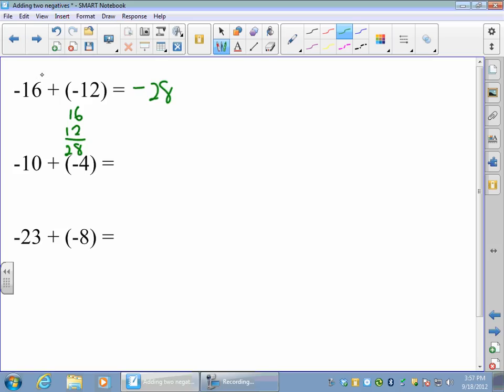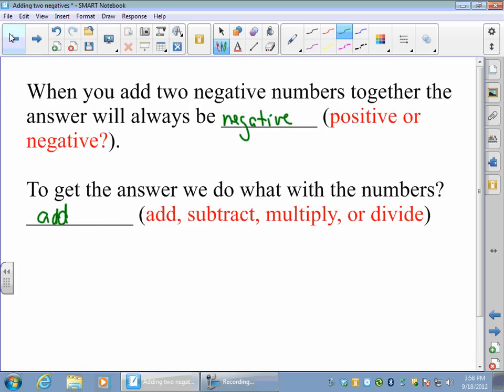Okay, so the first one, again they're both negative, so when I add them that's negative. 10 plus 4 is 14. That's it. And the last one is going to be a negative because they both are. 23 plus 8, that should give me 31, so my answer will be negative 31. And that's it. That's all there is to adding with two negatives. Either use your number line or remember this rule. It's always going to be negative, and we add the numbers.